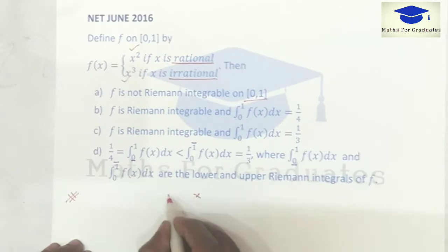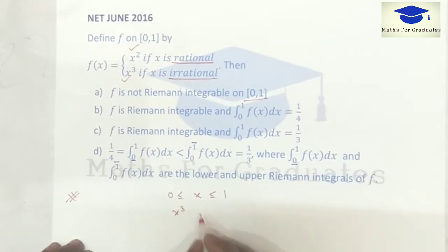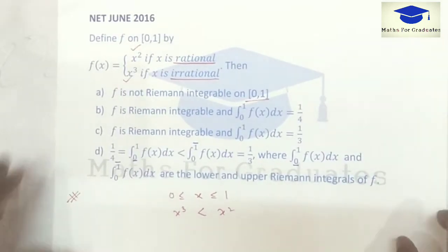Now since x belongs between 0 and 1, therefore x cubed will be less than x squared. Now finding lower Riemann integral and upper Riemann integral.